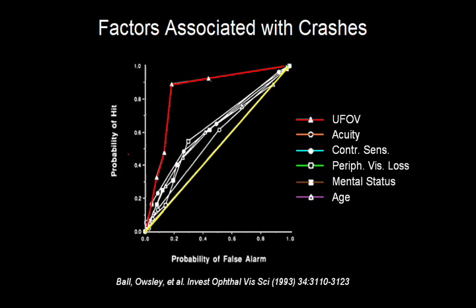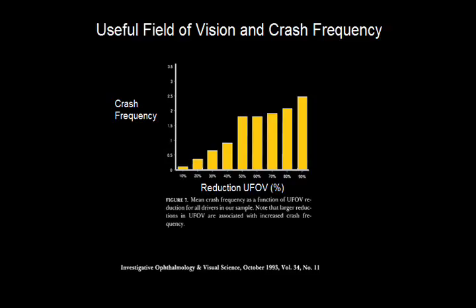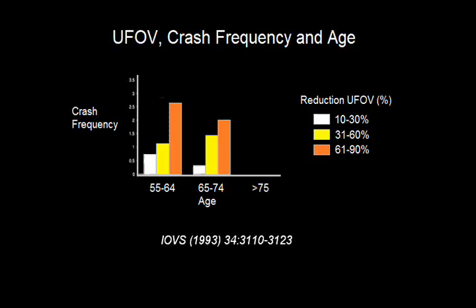The same article also presents the data another way. The bottom axis is percent reduction in useful field of view, and the vertical axis is crash frequency. You can clearly see how, as useful field of view decreases, crash frequency increases significantly. Looking at this by age group, with baseline starting at age 55, the crash frequency is dependent on useful field of view and essentially independent of age — a striking finding.